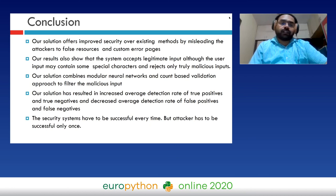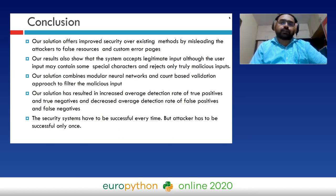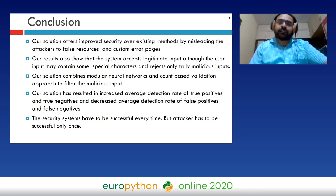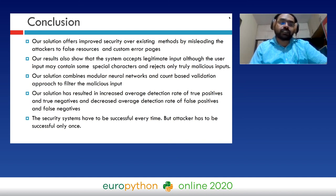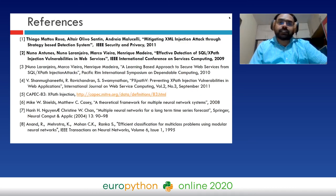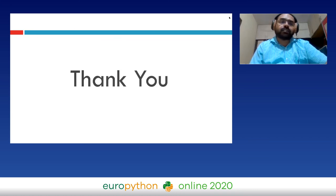In conclusion, our solution offers improved input security over existing methods by misleading attackers to false resources and custom error pages. The system accepts legitimate input even when it contains some special characters, and rejects only truly malicious inputs. Our solution combines modular neural networks and a count-based validation approach to filter malicious input, resulting in increased average detection rates of true positives and true negatives, and decreased rates of false positives and false negatives. As a final note: secure systems must be successful every time, but an attacker needs to succeed only once — with deception, we can buy extra time to protect resources, though we may not protect the system entirely.